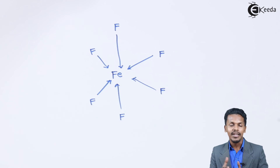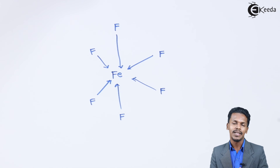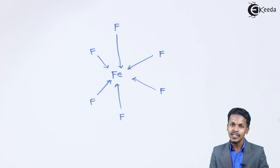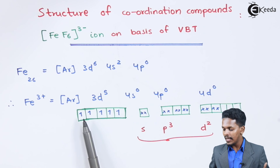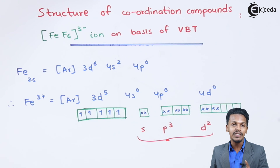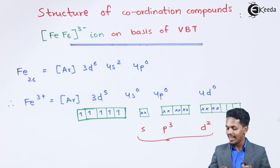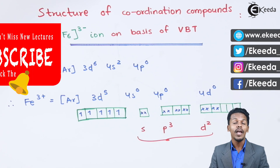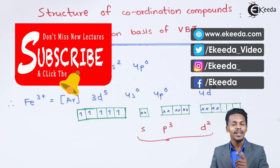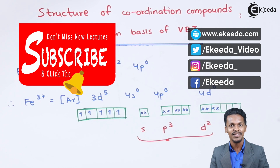Now regarding the magnetic property of this complex: since there are multiple unpaired electrons in the orbitals, this complex is paramagnetic in nature. Thank you for watching. I hope you understood this video clearly. Don't forget to subscribe to the channel.